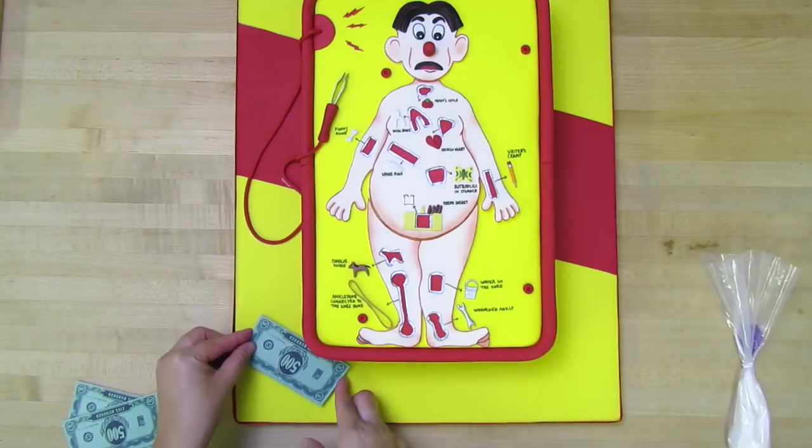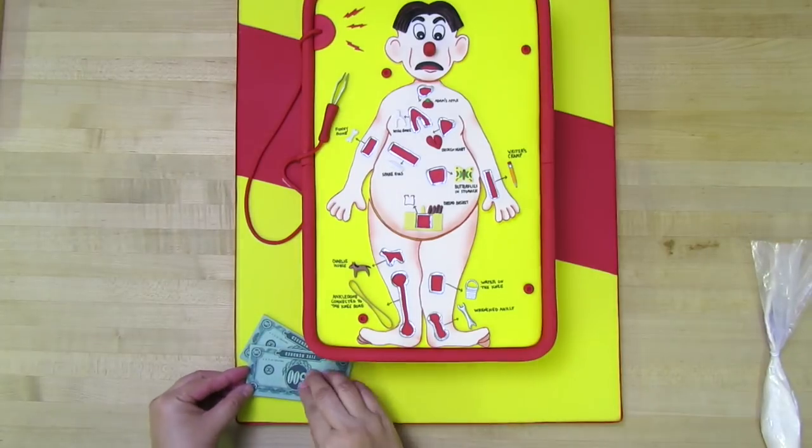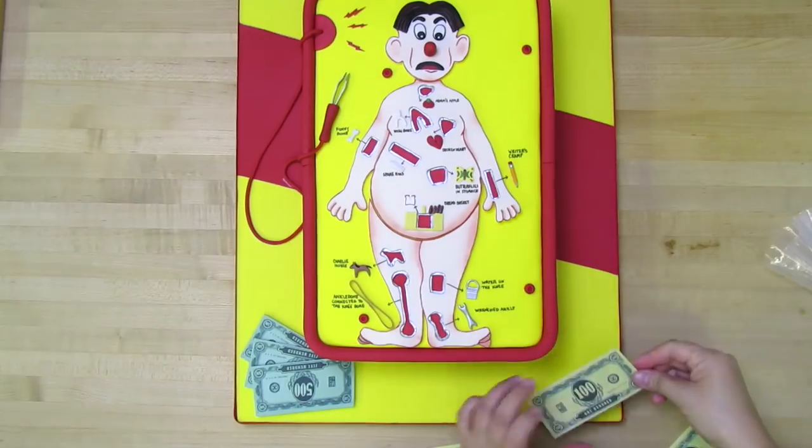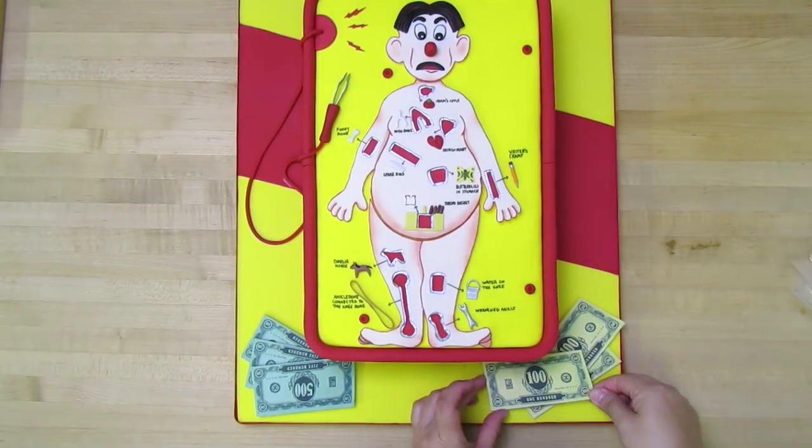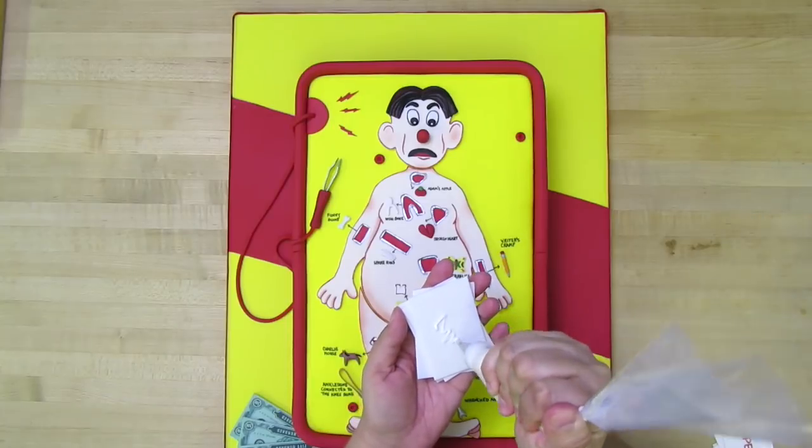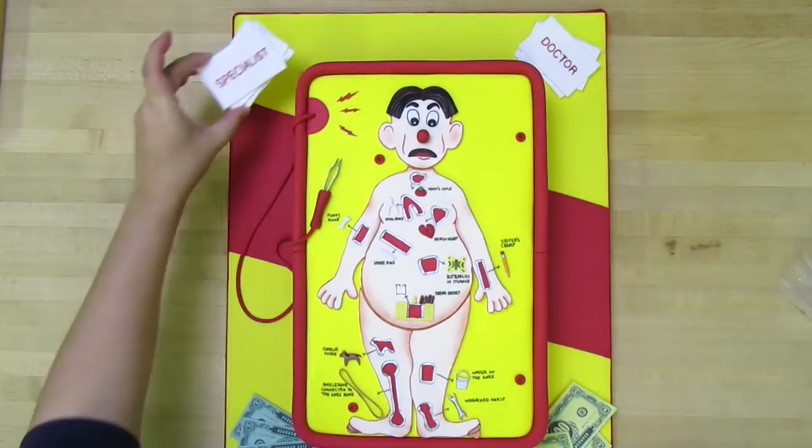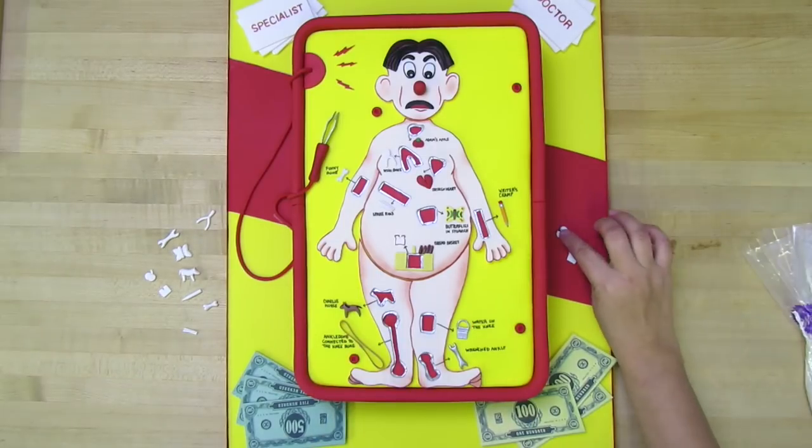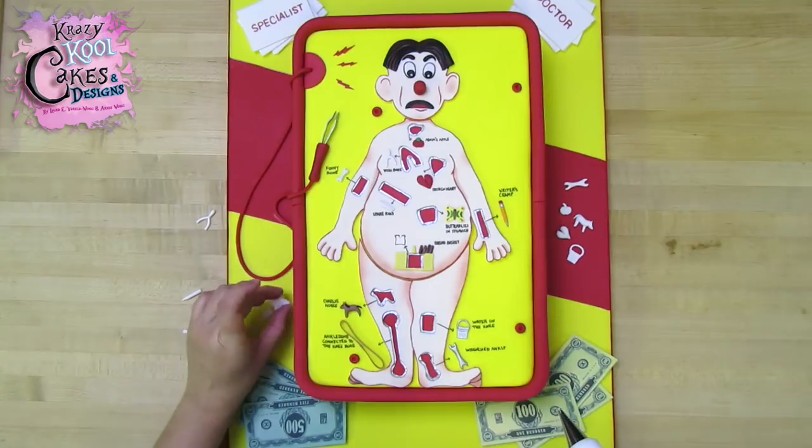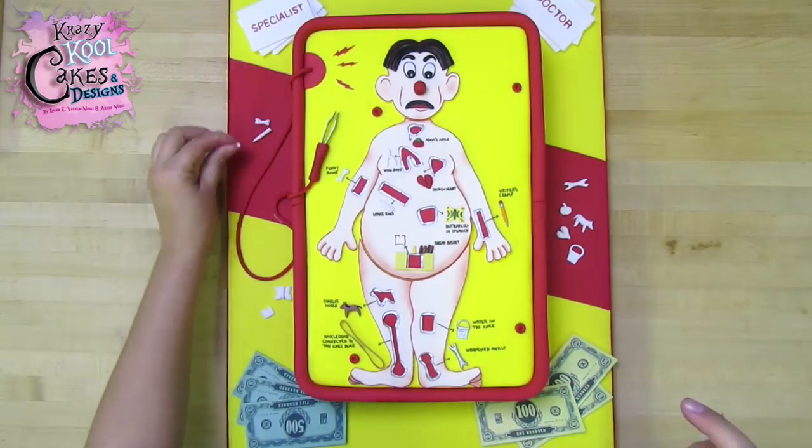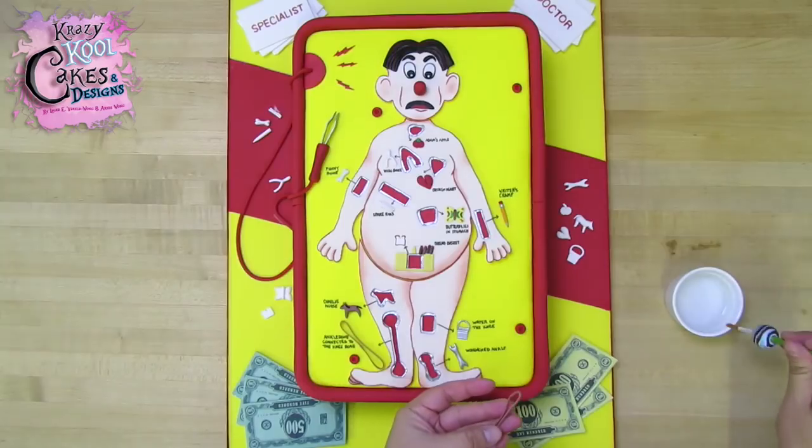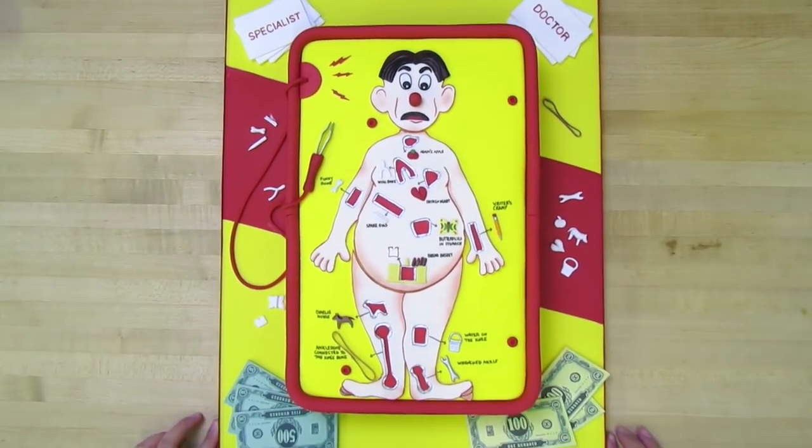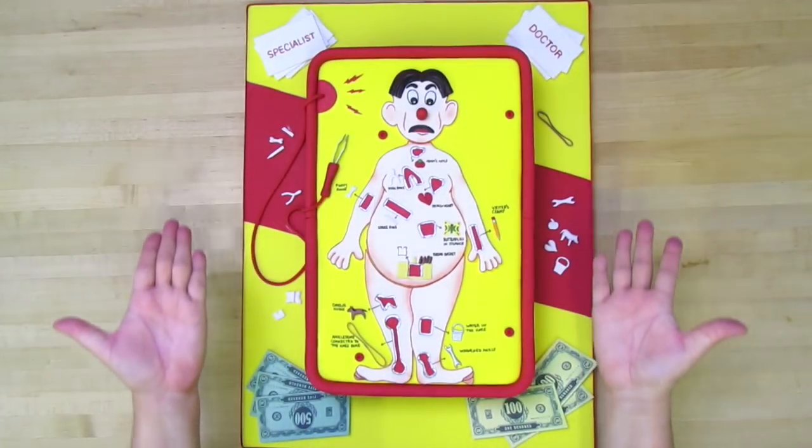Next, I'm going to decorate our board with our game money. I'm just going to add a little bit of royal icing to the back of each bill and then stack them. You can place these however you'd like, but I think stacked looks pretty cool. On the other side of our board, I'll be adding the Doctor and Specialist game cards. I can't believe we're practically done. The last thing I'm going to do is just add a dot of royal icing to the back of each game piece and just randomly decorate the board. Here's our finished Operation Game Cake. We hope you like it, everybody.